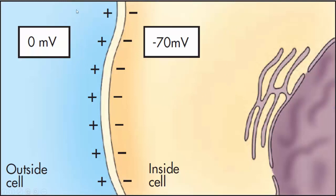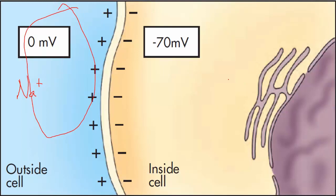The outside of the cardiac cell is positively charged and the inside is negatively charged — around negative 70 millivolts. Anywhere from negative 70 up to negative 90 millivolts is the normal resting charge for the cell to stay stable. During this resting or polarized state, extracellular sodium keeps the outside of the cell more positively charged than the inside where potassium ions reside. In order for the cell to depolarize, sodium must move inside and potassium must move outside.